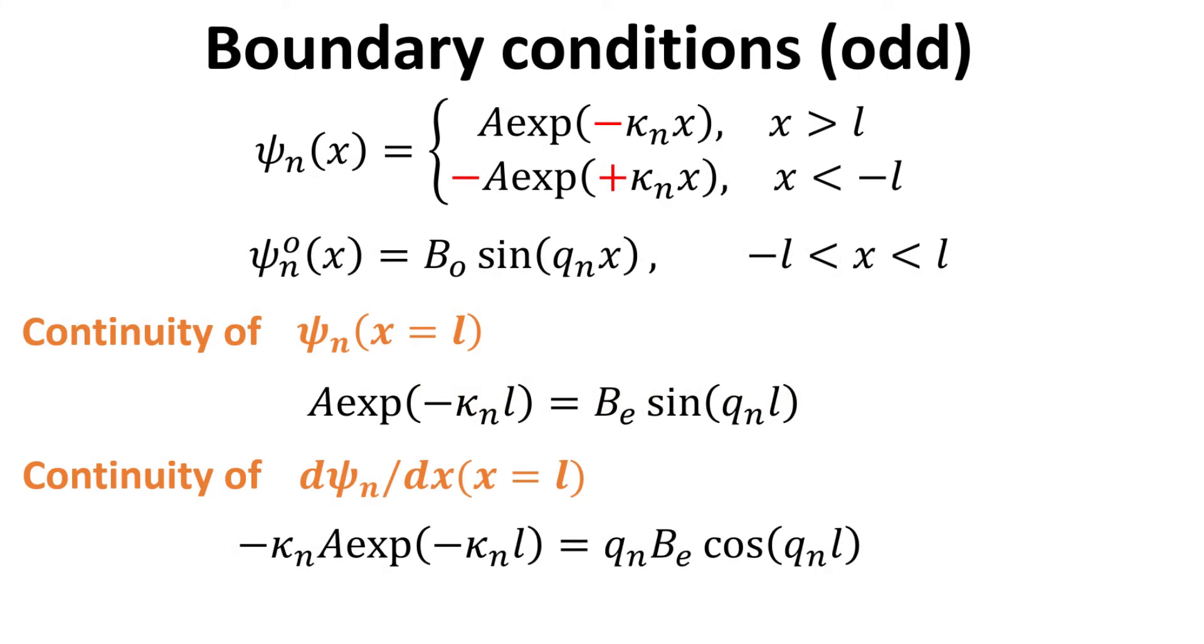Next, we collect our piecewise solutions within and outside the well for the odd case. Similarly, the constants A and B can be pinned down by imposing boundary conditions.